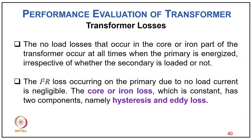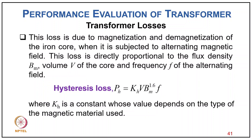The no-load losses occurring in the core occur at all times when the primary is energized, regardless of whether the secondary is loaded or not. The I²R loss in the primary due to no-load current is negligible. Core or iron losses are constant and have two components: hysteresis loss and eddy current loss — both due to magnetization and demagnetization of the iron core under alternating magnetic field, proportional to flux density Bm, volume, and frequency f.